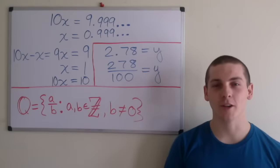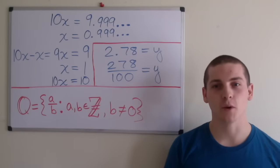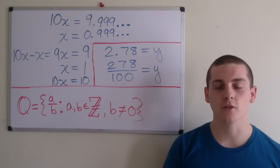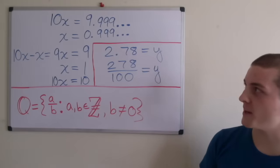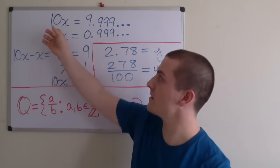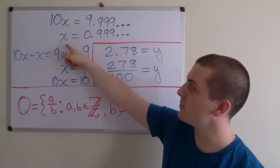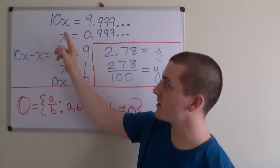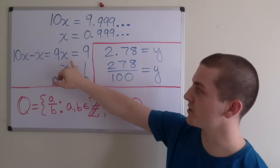In this video, I'll be introducing the rational numbers and set builder notation. The rational numbers are defined as a ratio of two integers. Examples include the integers themselves, terminating decimals, and repeating decimals. So let's start with repeating decimals. If we let 10x equal 9.999 repeating, then if we divide both sides by 10, x equals 0.999 repeating. And if we subtract x from 10x, we have 9x equals 9. Then divide both sides by 9, we have x equals 1.